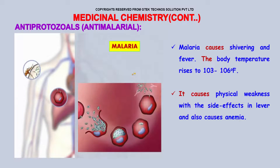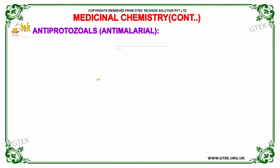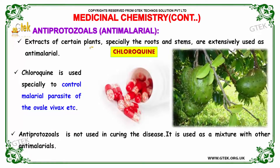Antiprotozoals — malaria causes shivering and fever. The body temperature rises to 103 to 106 degrees Fahrenheit during malaria. This causes physical weakness with side effects in the liver and also causes anemia.